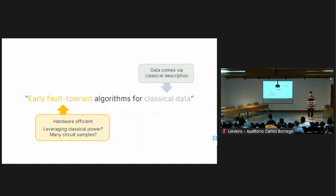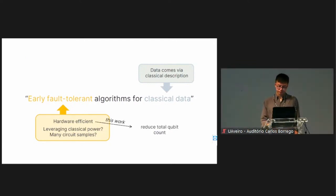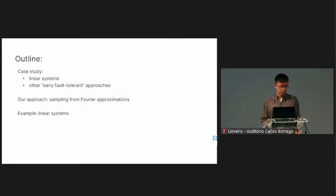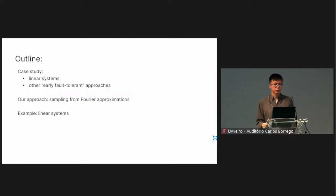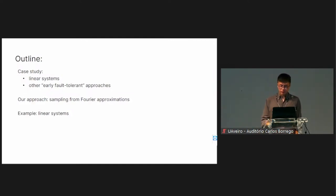By early fault-tolerant we mean hardware-efficient, and for this work we focus on reducing the total qubit count. For the rest of the talk I'll first outline a typical fault-tolerant quantum algorithm for linear systems, then briefly discuss other early fault-tolerant approaches, then discuss our approach, and finally look at a concrete example for the linear systems problem.